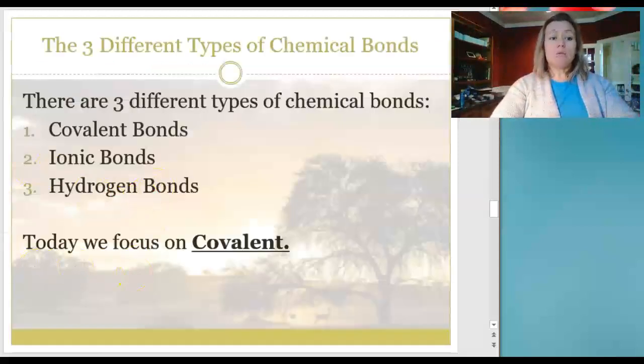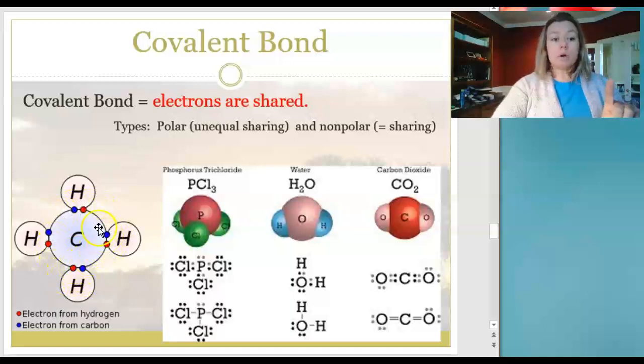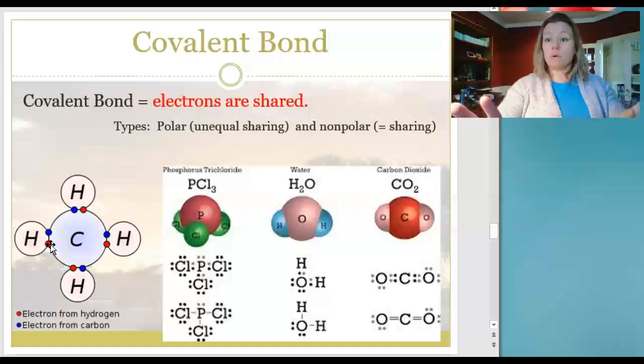In a covalent bond, electrons are shared. There are polar and there are nonpolar sharing. If you see this, all these little weird dots count the dots around each atom. This carbon owns four of its own electrons in the valence shell only, and each hydrogen owns its own one. Hydrogen and helium, they're happy with two. Carbon needs eight—four that it owns and four that it's borrowing or sharing.